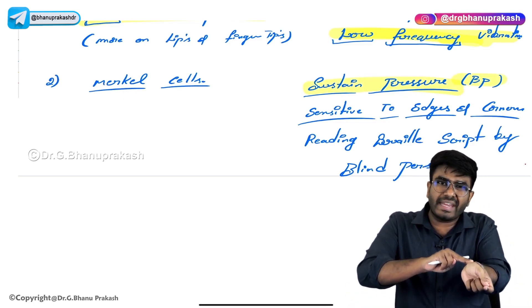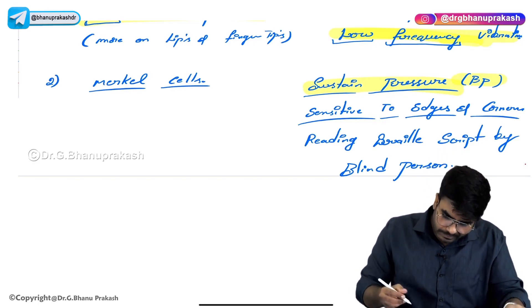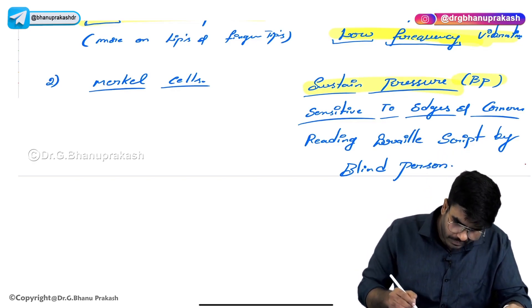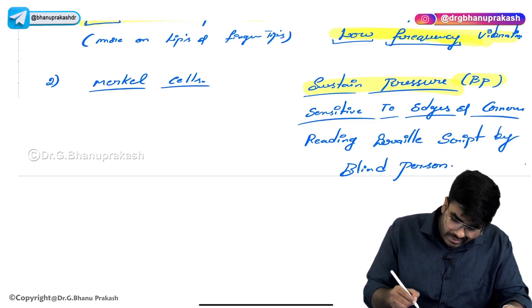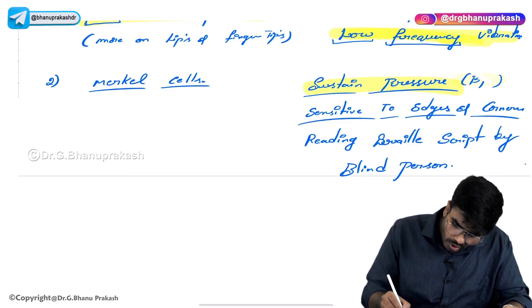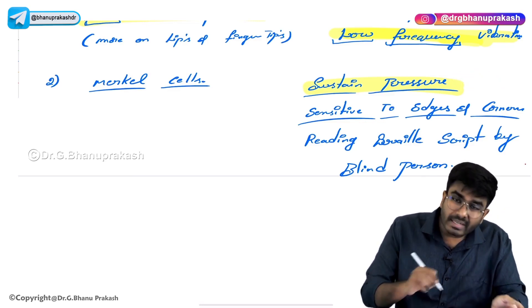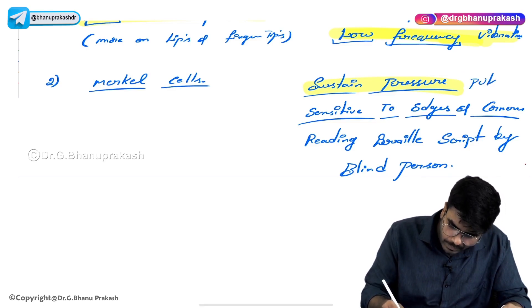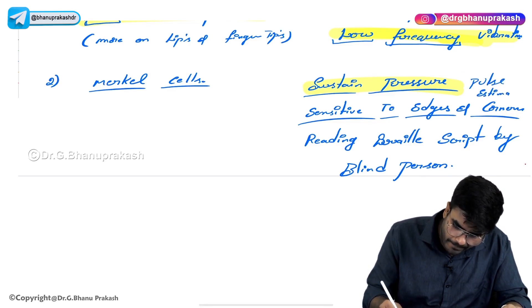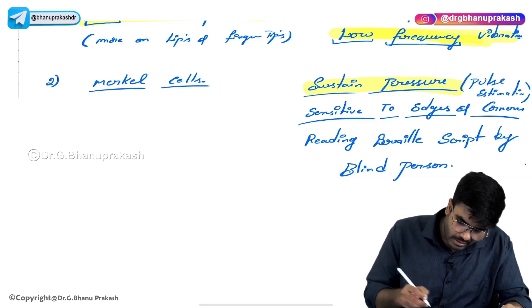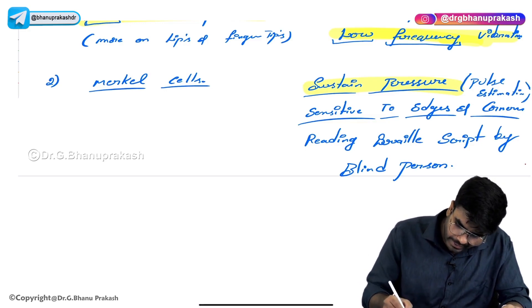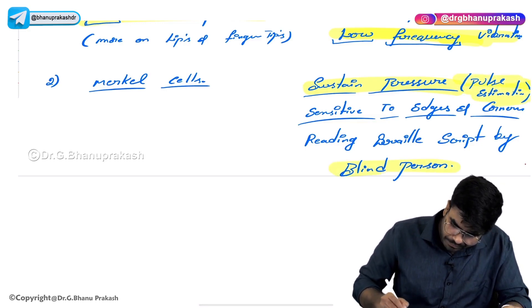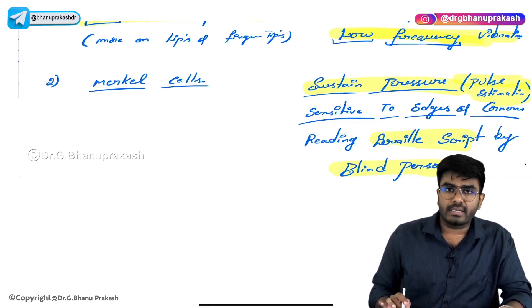A small correction here — it's not BP measurement but pulse estimation. So for estimating the pulse and for reading Braille script, you need Merkel cells. Two important points: Merkel cells respond to sustained pressure and are sensitive to edges and corners.